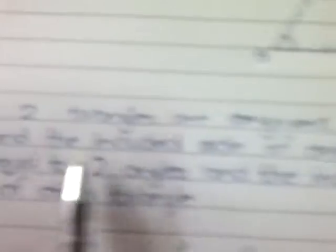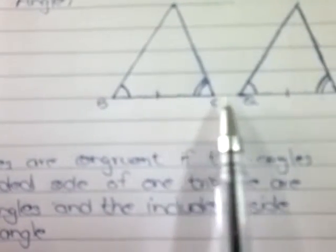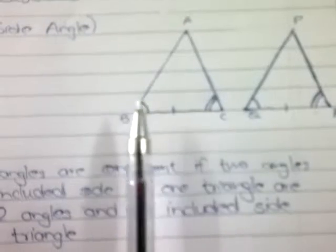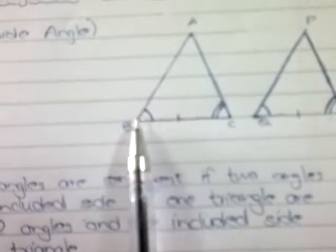It says that two triangles are congruent if two angles and the included side of one triangle are equal to two angles and the included side of the other triangle. The side necessarily has to be included between the two angles.